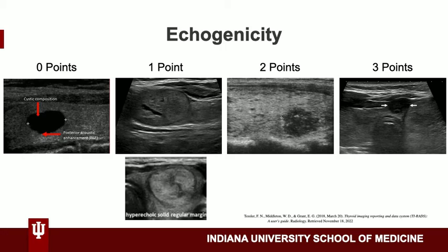In this category we will be looking at echogenicity. Anechoic nodules get zero points. Isoechoic or hyperechoic nodules get one point. Hypoechoic nodules get two points. And very hypoechoic nodules get three points.